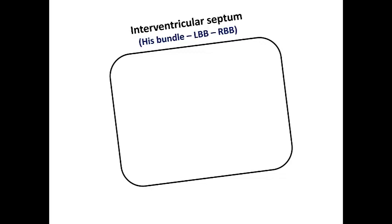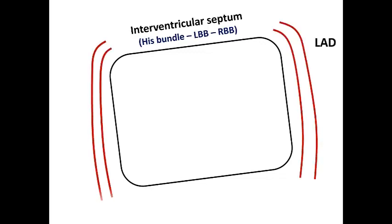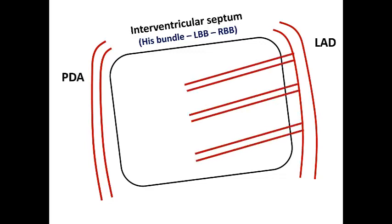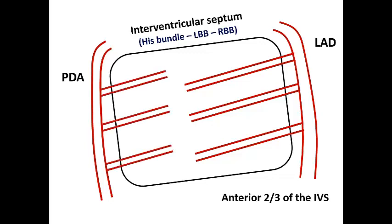Regarding the interventricular septum, which includes the His bundle, left bundle branch, and right bundle branch: the septal perforators of the LAD supply the anterior two-thirds of the septum, and the PDA septal branches supply the posterior third. The His bundle, left bundle branch with its two fascicles, and right bundle branch are mainly dependent on the LAD and septal perforators. When LAD occlusion is proximal to the first septal perforator, the patient may develop acute right or left bundle branch block, and in some cases infra-Hisian complete AV block in anterior STEMI.